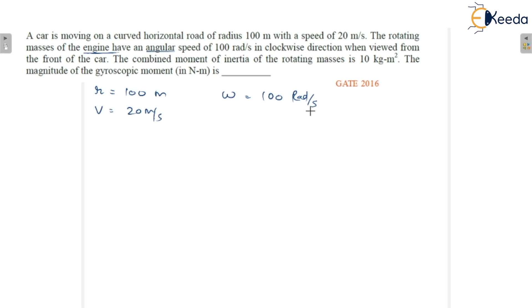The combined moment of inertia of the rotating masses is 10 kilogram meter squared. The magnitude of the gyroscope moment is being asked. The question gives the combined moment of inertia of the rotating masses.